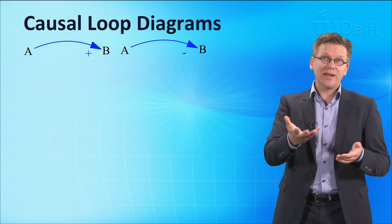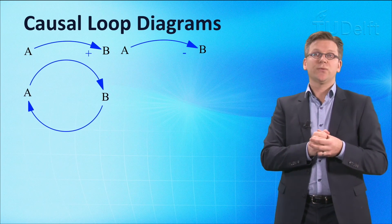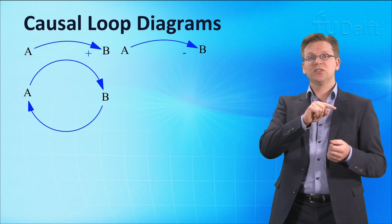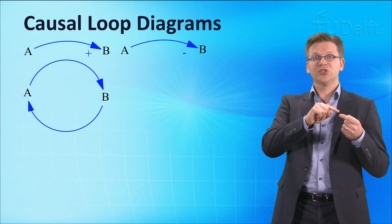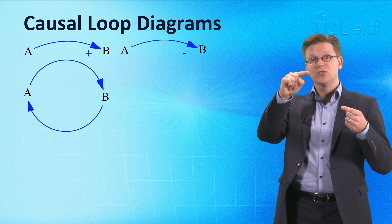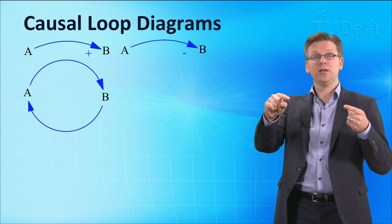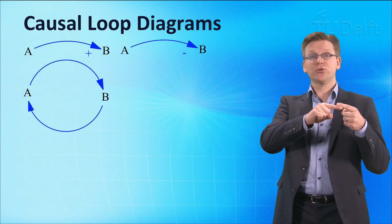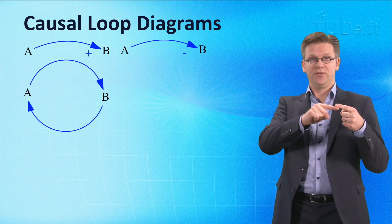A feedback loop consists of two or more causal links between elements that are connected in such a way that if one follows the causality starting at one element in the loop, one eventually returns to the first element.